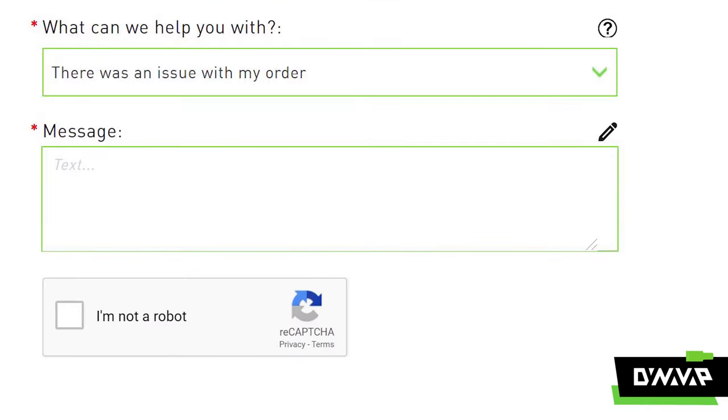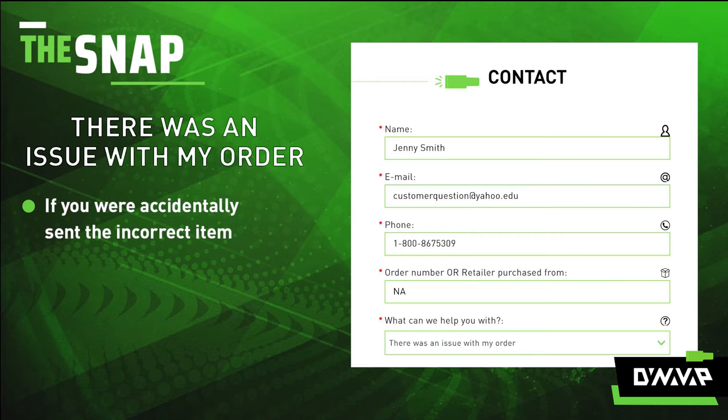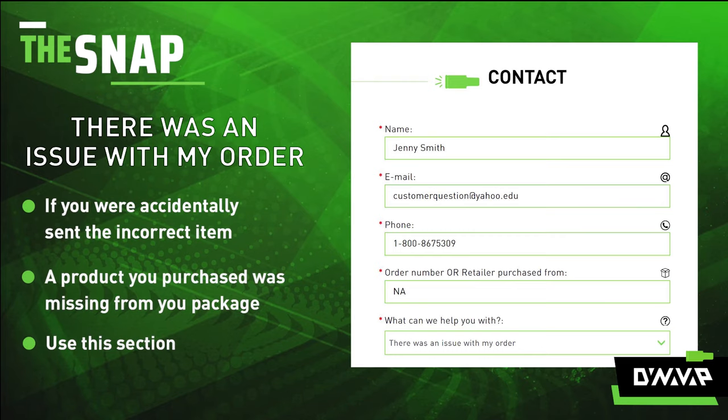"There is an issue with my order." Select this option if you were accidentally sent the incorrect item or the product you purchased is missing from your package.